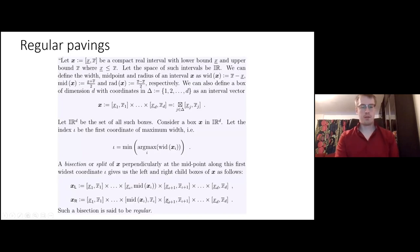Diving into some of the math behind the regular pavings. We have this interval, a compact real interval, where this x lower bar denotes the lower bound and this is the upper bound with the bar above it. We can define the mid points, width and radius. For this definition, you need to know the mid points are just basically right in the middle of the interval.